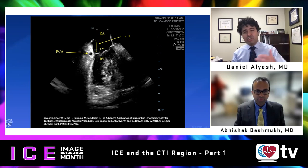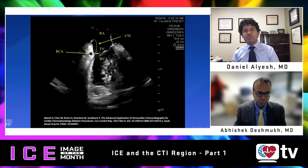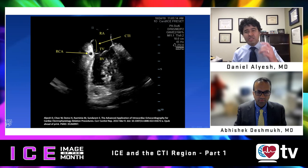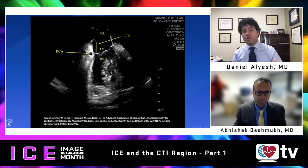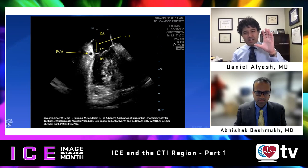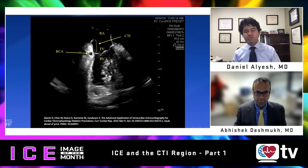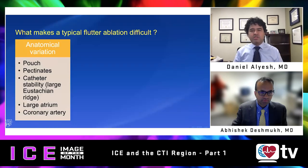We're going to start off with an image that actually came from a paper we recently published where we annotate the CTI. You can see the CTI region, the inflow/outflow view of the ICE, as well as the right coronary artery and Eustachian ridge. We're going to dive deeper into all this, but this is our home base for how we think about ICE imaging as applied to ablation in this region.